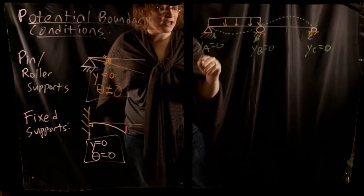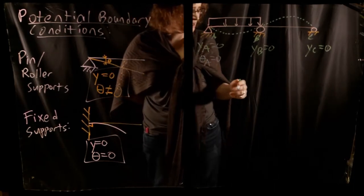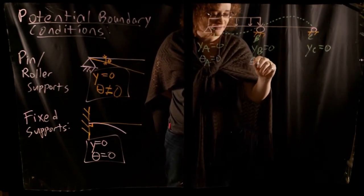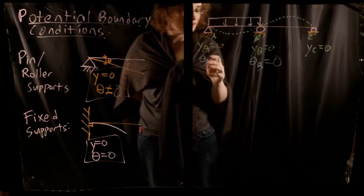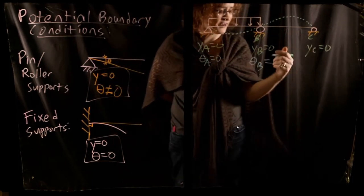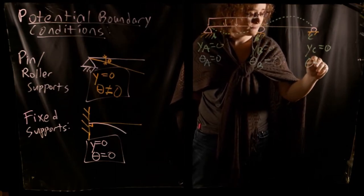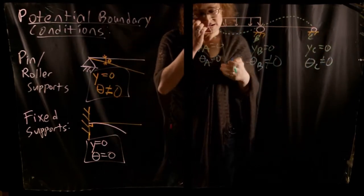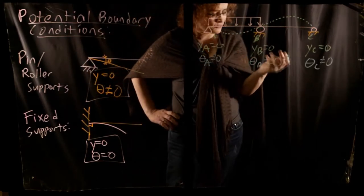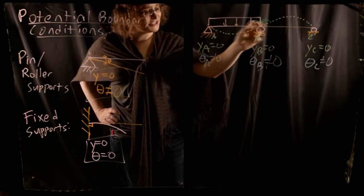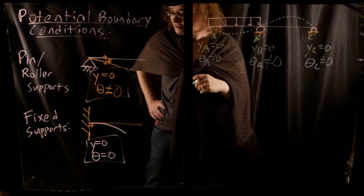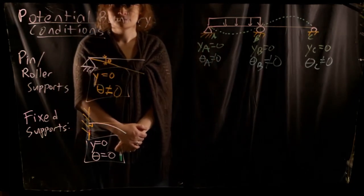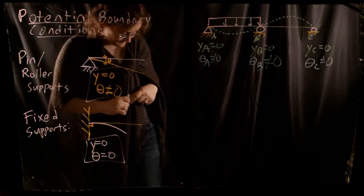Now I want to look at a third and final potential source of boundary conditions: the beam equations themselves, specifically the continuity of the beam. When doing beam analysis, it is a valid and necessary assumption to assume that beams are continuous. The shear and moment functions are not necessarily continuous — shear diagrams can have sudden drops from point loads, and moment diagrams can have jumps from applied couples.